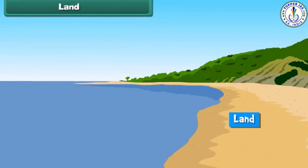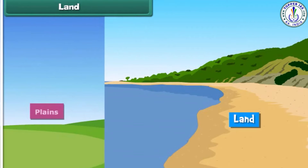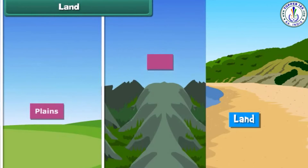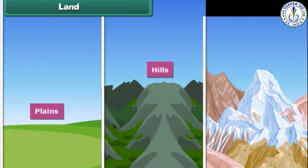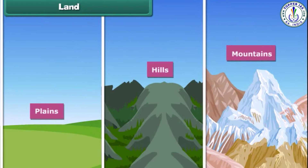Land is that part of Earth's surface that is not covered with any water body. Plains, hills and mountains are examples of land. Come, let us learn about them.